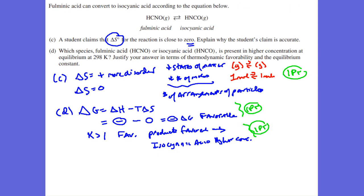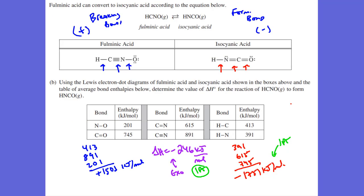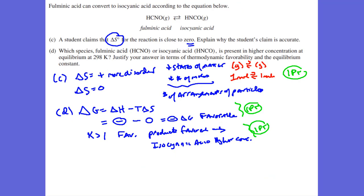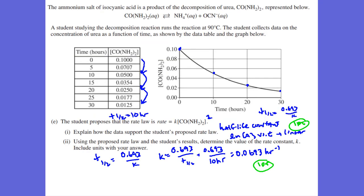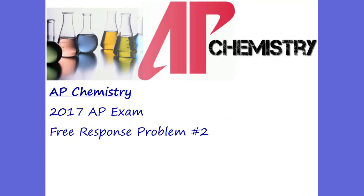This is a 10-point problem. Part A was worth 2 points, part B was worth 2 points — that's 4. Part C was 1 point — that's 5. Parts D gives points 6 and 7. Part E gives points 8 and 9. And the 10th point is part F. That's the 2017 AP Chemistry exam, problem number 2. See you tomorrow for problem number 3. See you guys, bye.